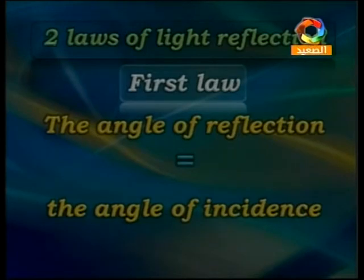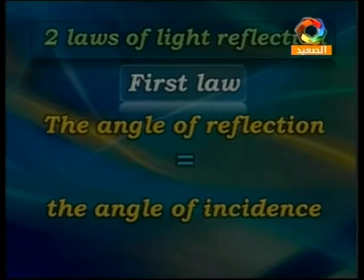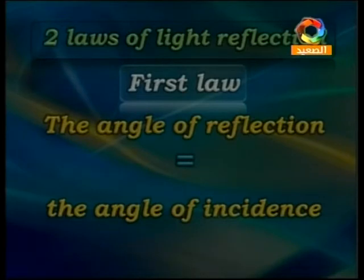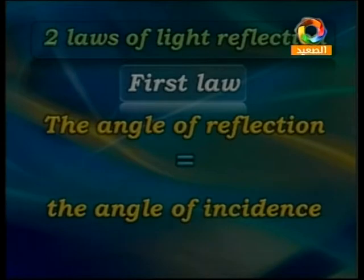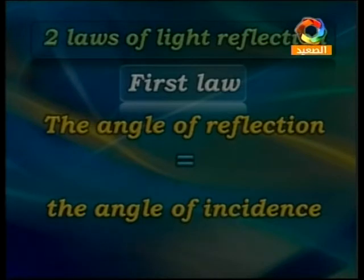What is the conclusion of this activity? We have two laws of light reflection — two rules that control light reflection. The first law is: the angle of reflection equals the angle of incidence. In other words, the angle of incidence equals the angle of reflection — they are the same thing.